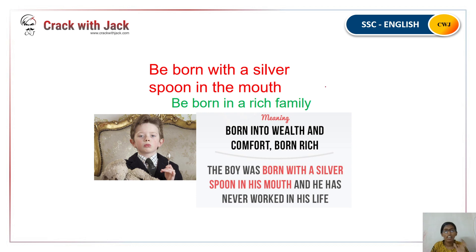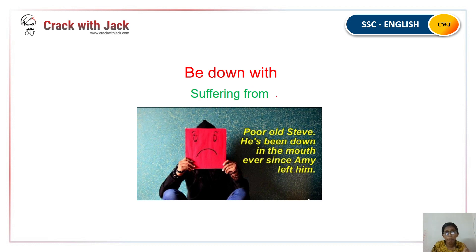The first idiom is 'Born with a silver spoon.' This means to be born into a wealthy family — if someone is born with a silver spoon, they come from a rich background and have wealth available to them from birth.